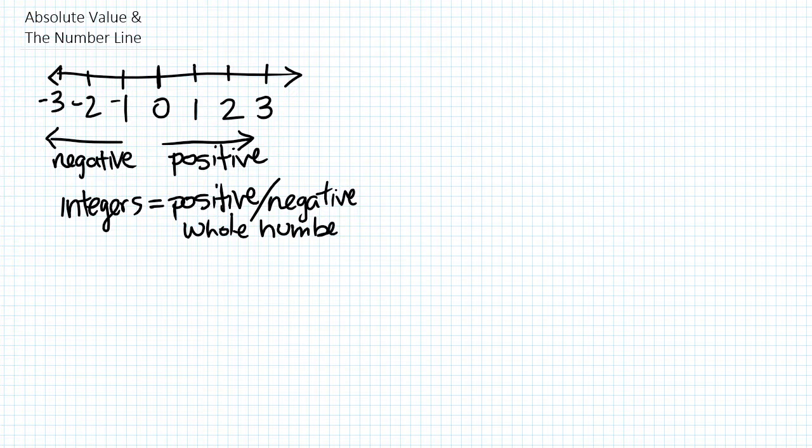Now when we talk about the absolute value of something, if we're here at 2, the absolute value, which we represent with these tall vertical lines, is really just saying what is the distance to zero. Well, the distance to zero from 2 is 2. So the absolute value of 2 is 2.